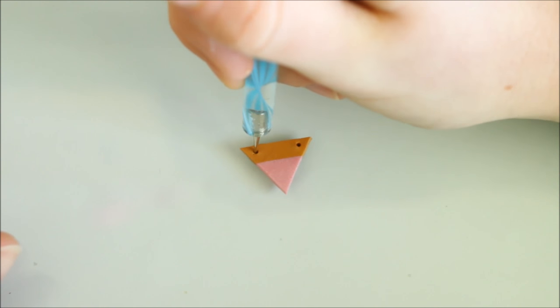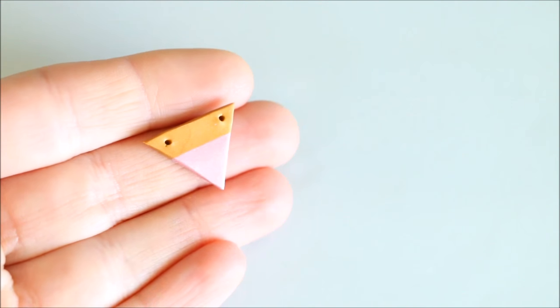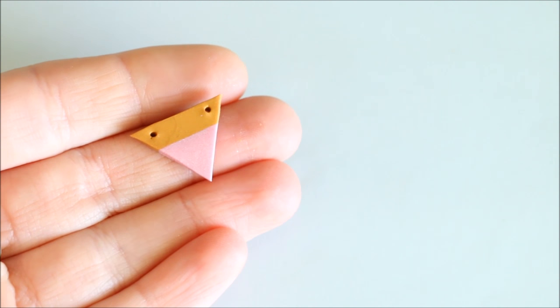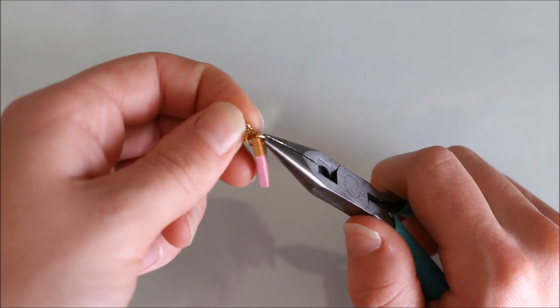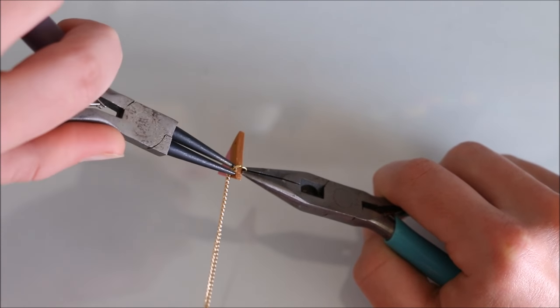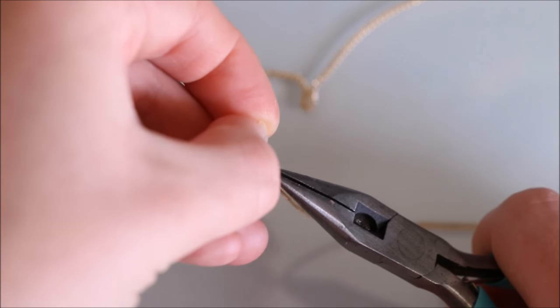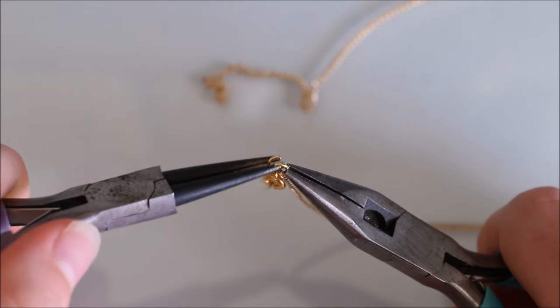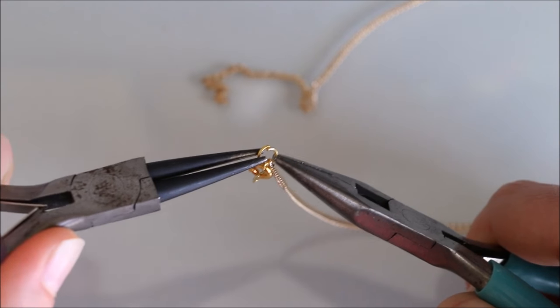It's then time to bake the piece in the oven and I baked mine for around 20 minutes. After baking let it cool and it's time to add the chain, the clasp and use some jump rings and pliers to help you. You can also glaze your pendant if you like but I decided to leave mine as it is for a matte finish.